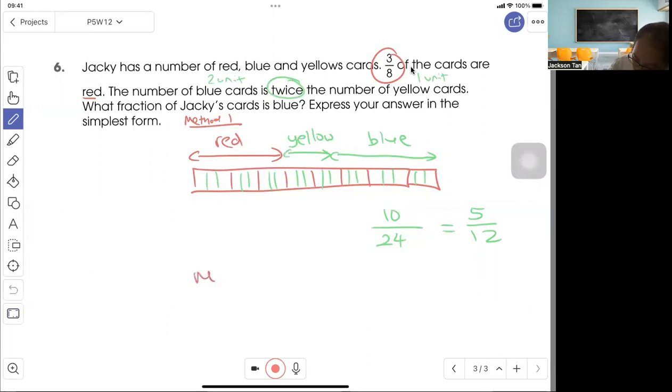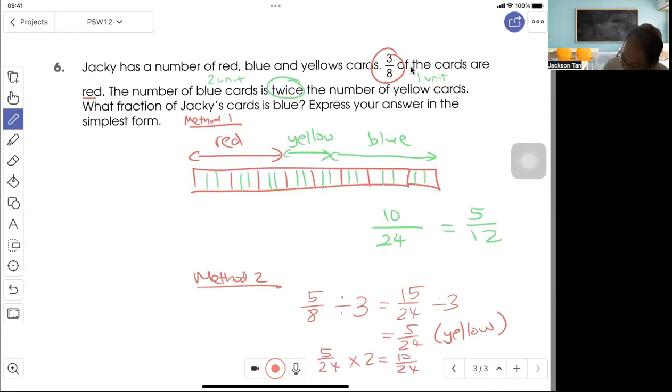You can also do method two. Since you know the remaining is five out of eight (one whole minus three-eighths is five-eighths), so here I can just divide by three. So divide by three, I get five out of 24. So this is my yellow. Blue would be five out of 12.